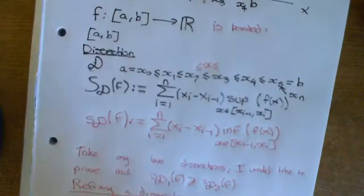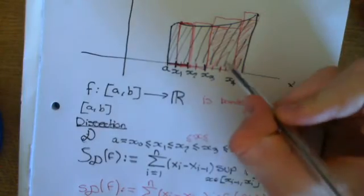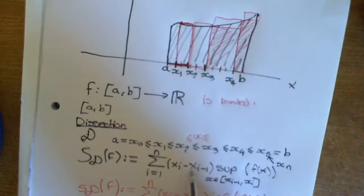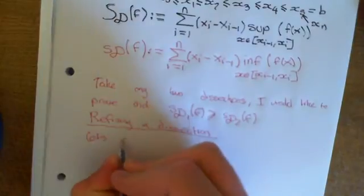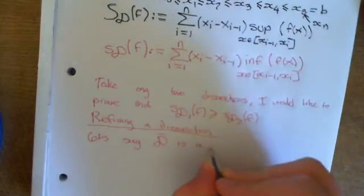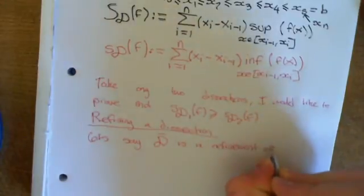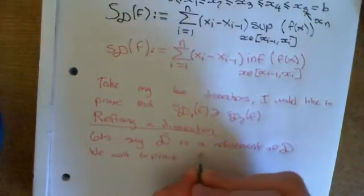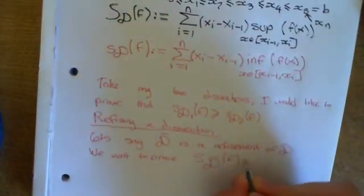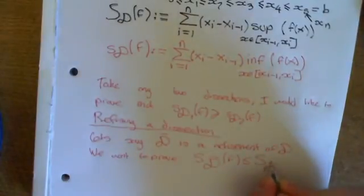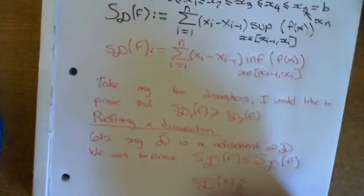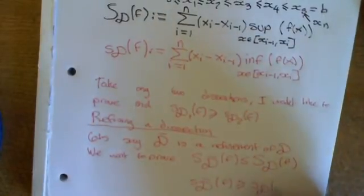What can we prove about that? If D-bar is a refinement of D, we want to prove that the upper Riemann sum over the refined dissection of f is less than or equal to the upper Riemann sum over the original dissection. We also want to prove that the lower Riemann sum over the refined dissection of f is greater than or equal to the lower Riemann sum over the original dissection of f.